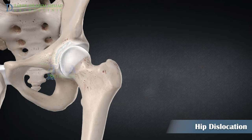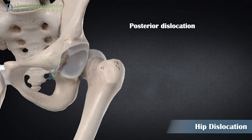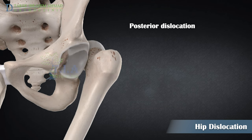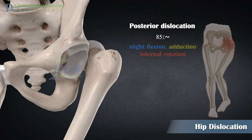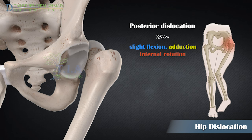Hip dislocation can occur in two directions. Posterior dislocation is the most common, occurring in approximately 85 percent of cases. The thigh bone is pushed out of the socket in a backwards direction, leaving the lower leg in a fixed position with the knee and foot rotated toward the middle of the body.